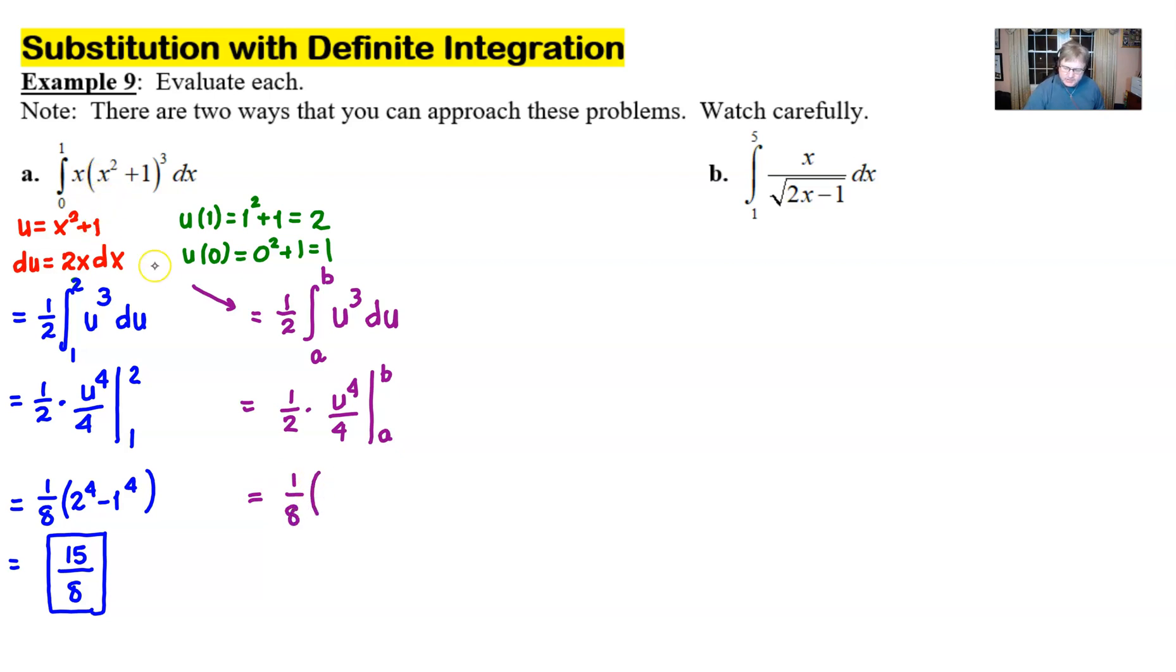We're going to change this u back into x squared plus 1 keep it to the fourth power and at this point you can go back and use the original boundaries of 1 and 0 since your expression is in terms of x. And as you do that I want you to pay close attention to the fact that you're going to have 1 squared plus 1 which is 2 to the fourth that would be 16 minus 0 squared plus 1 is 1 to the fourth is 1 and you get that same result of 15 eighths.